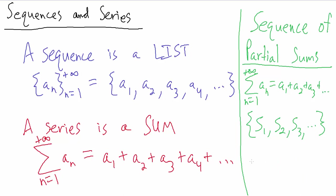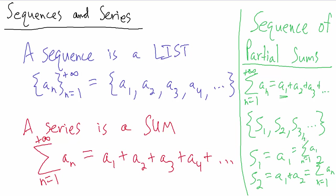What exactly are these S_n's? Well, S₁ is just the first term, a₁. S₂ is a₁ plus a₂, which in sigma notation is the sum from n equals 1 to 2 of a_n. S₁ equals just a₁ — we could write that as the sum from n equals 1 to 1 of a_n, but that would be overkill. So S₁ is a₁, and S₂ is a₁ plus a₂.